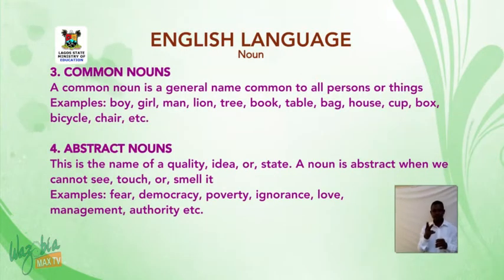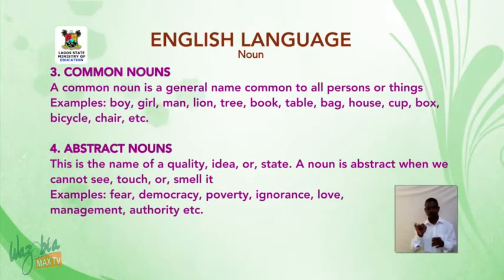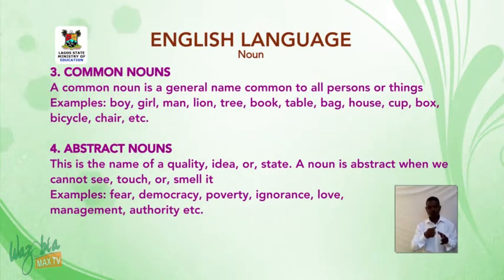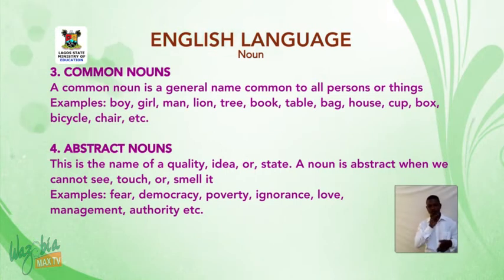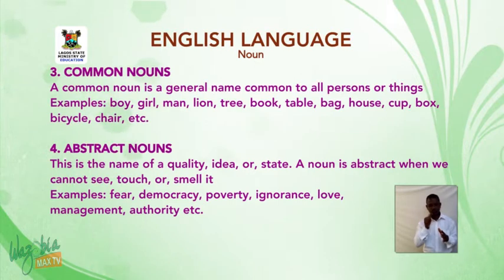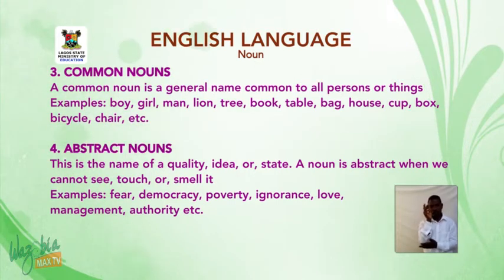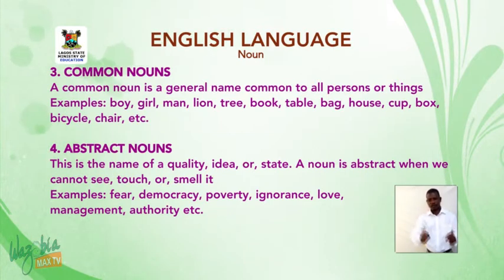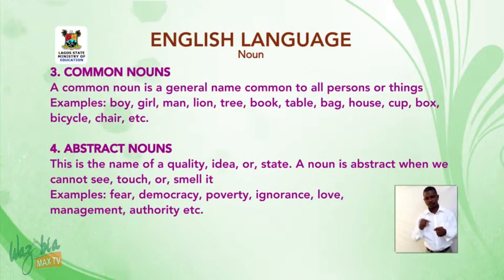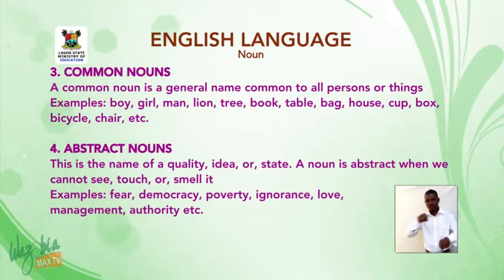Three: common nouns. A common noun is a general name common to all persons or things. Examples: boy, girl, man, lion, tree, book, table, bag, house, cup, box, bicycle, chair, etc.